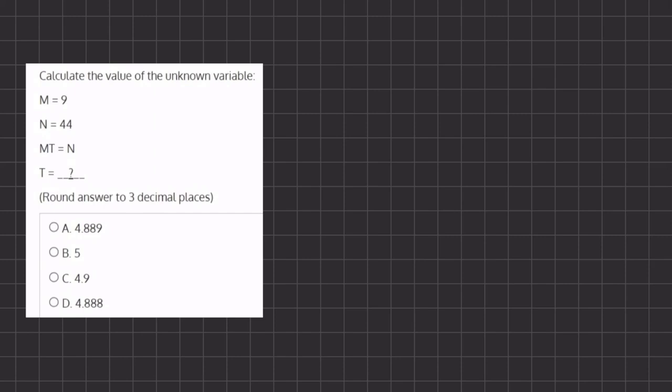In this problem we want to calculate the value of the unknown variable t. We are given m = 9 and n = 44, and we have this equation. Let's plug in what we have and isolate t. So instead of m we're going to write 9, giving us 9t equals n, which is 44.